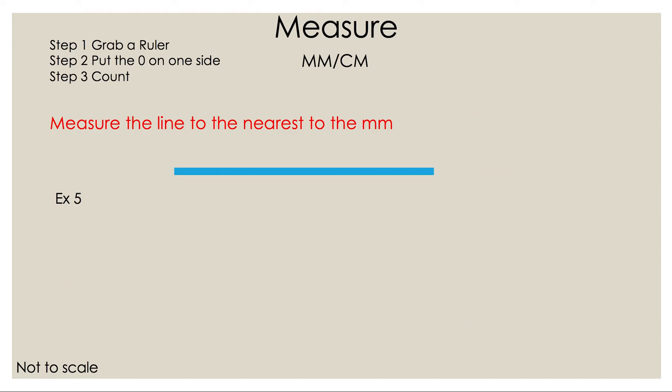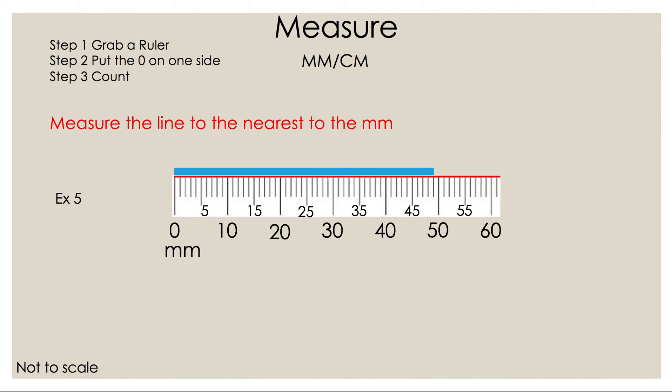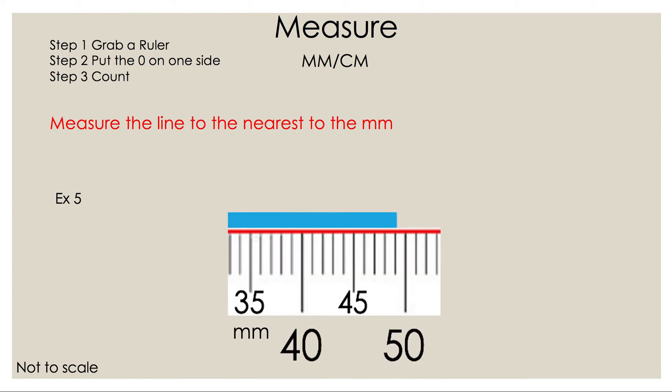Take a look at example five. Measure the line to the nearest millimeter. Let's bring up the ruler to the line. Let's blow it up so it's easier to count. Once again if 45 isn't written there, halfway between 40 and 50 is 45. So you can do that mentally in your head. Let's start counting at 45.